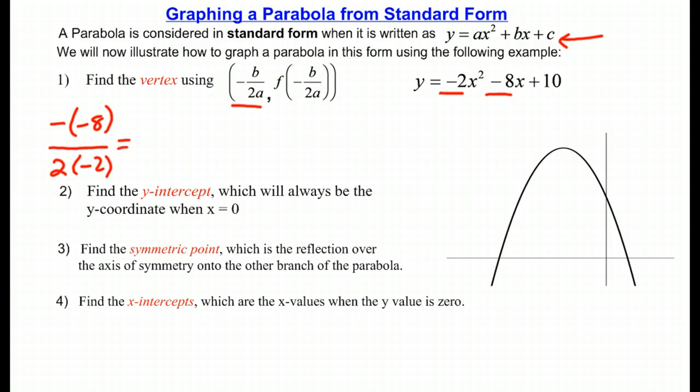This will give us a positive 8 on the top because of the negative of a negative, and on the bottom we'll get negative 4, and all that simplifies to a negative 2. If that number comes out particularly ugly, you might want to use a calculator to help you with arithmetic. So we now know the x-coordinate of our vertex. Now it's time to find the y.